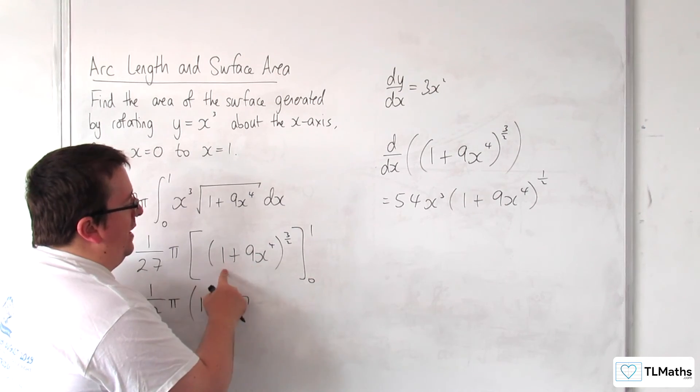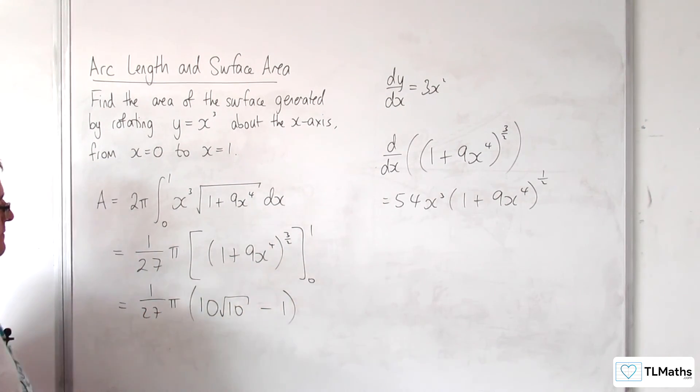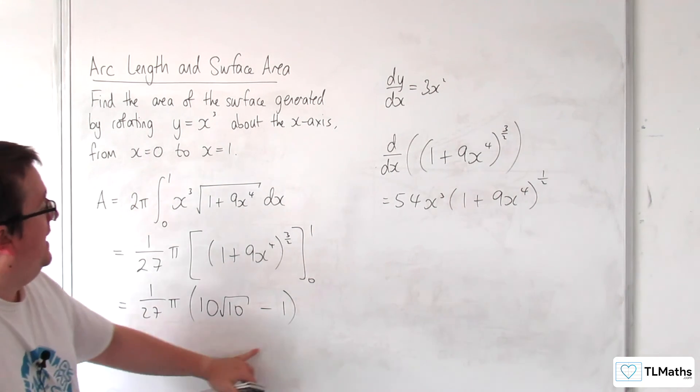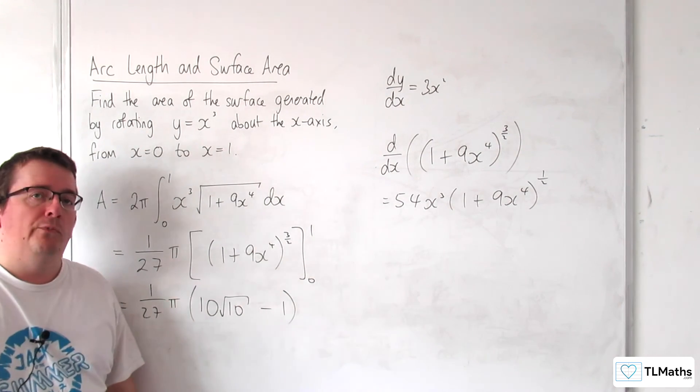Then substituting the 0, we're going to get 1 to the power of 3 halves, so take away 1. And there, that's as nice as I can write my answer. So this is the exact area of the surface generated by rotating y equals x cubed about the x-axis from 0 to 1.